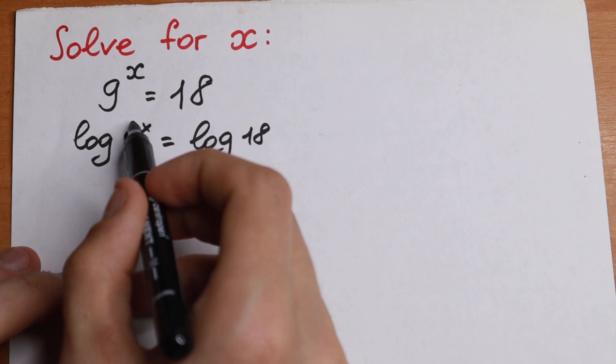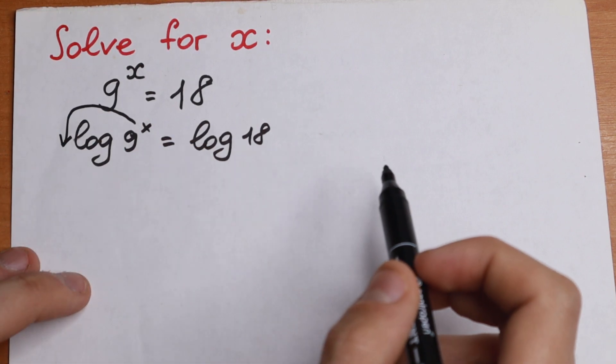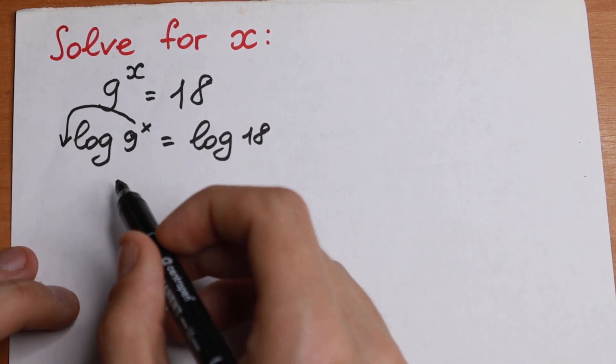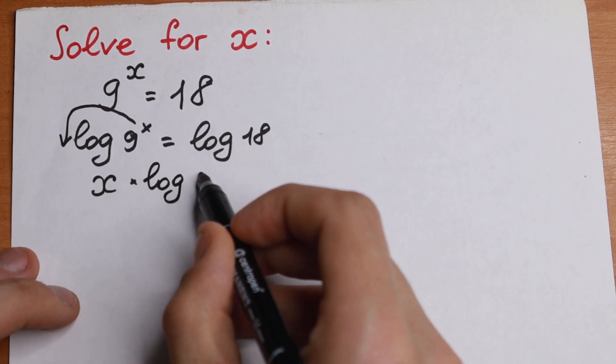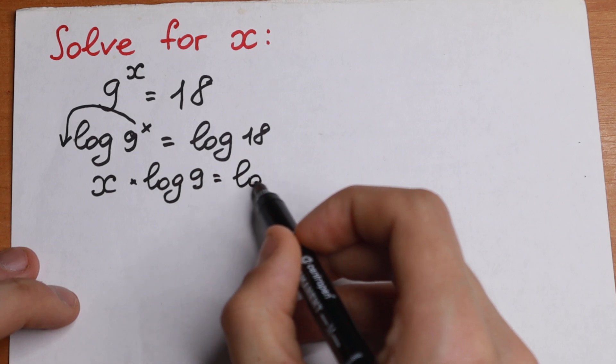And moreover we know the rule, if we have x in our power, this x jumps right here in the beginning. So as a result we'll have x times log 9 equal to log 18.